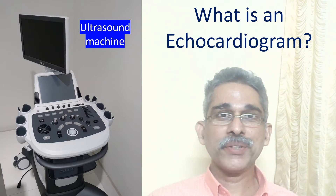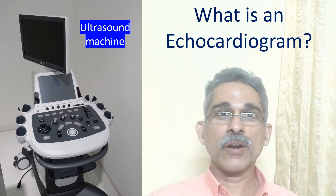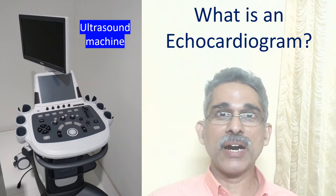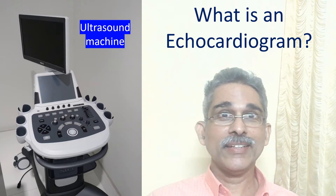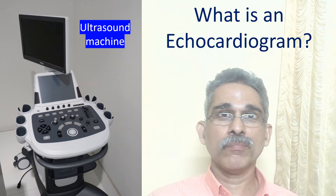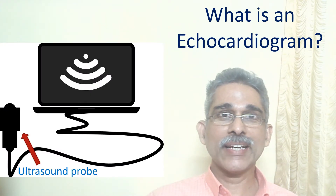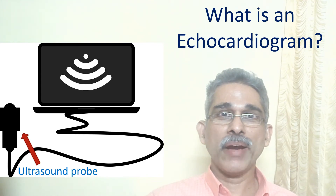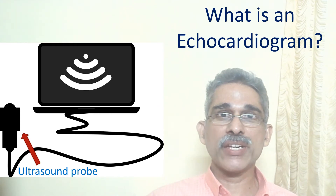Computer synthesized images are then produced from the echoes received from various parts of the heart. This is similar to the location of aeroplanes in the sky by a radar system. The ultrasound signals are sent and received by a probe placed on the chest in specific locations.